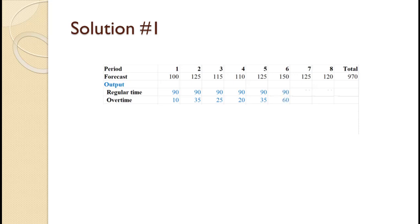In period 6, we produce the full 90 in regular production. That leaves 150 minus 90 equals 60 to be produced in overtime. In period 7, we produce the full 90 in regular production. That leaves 125 minus 90 equals 35 to be produced in overtime. In period 8, we produce the full 90 in regular production. That leaves 120 minus 90 equals 30 to be produced in overtime.